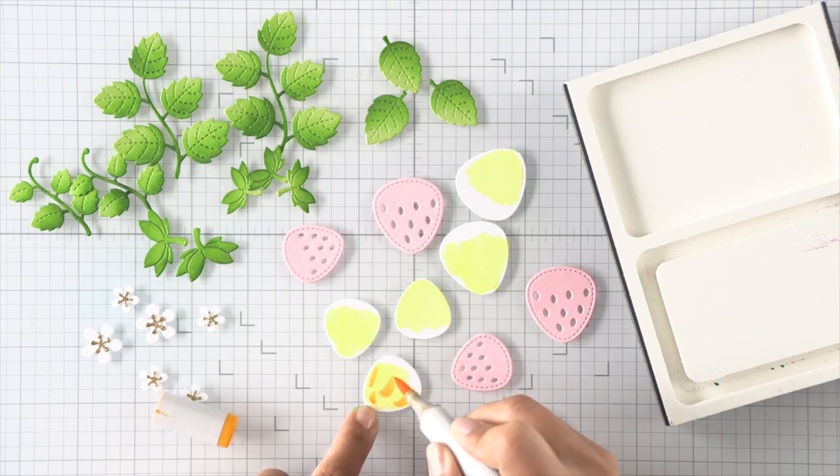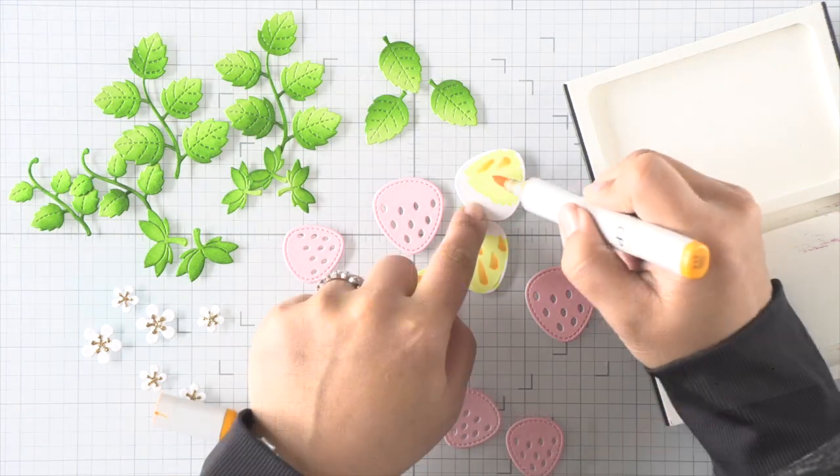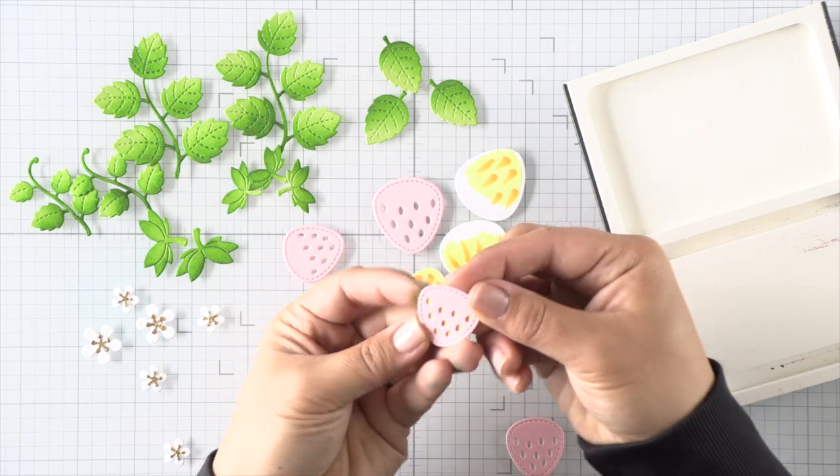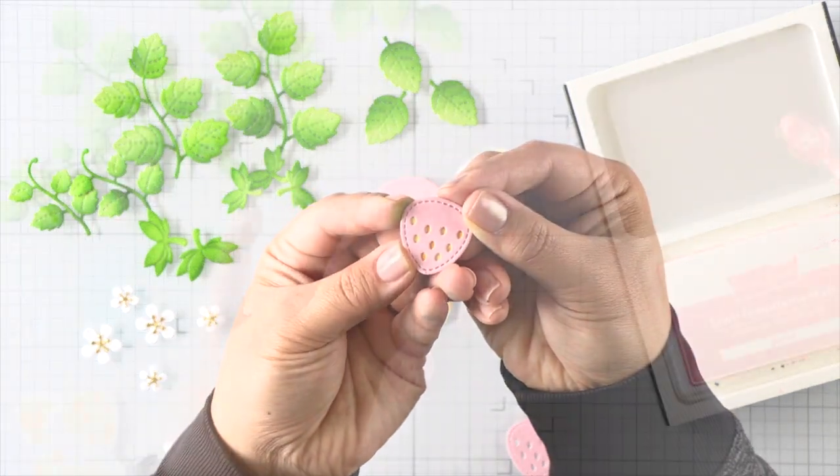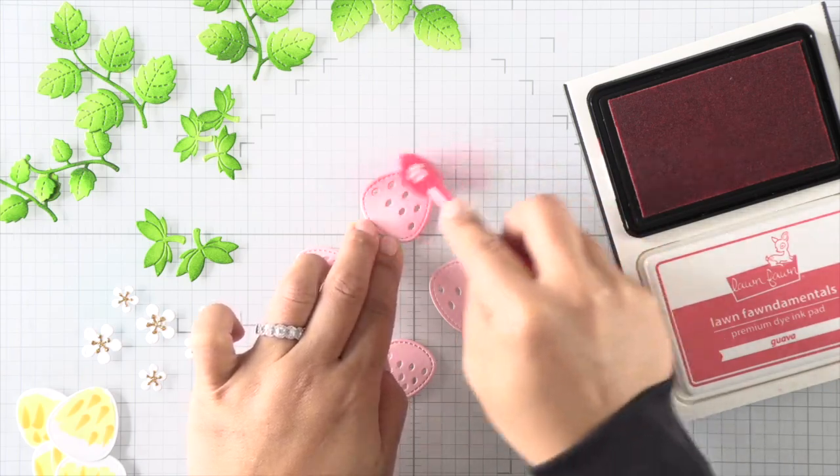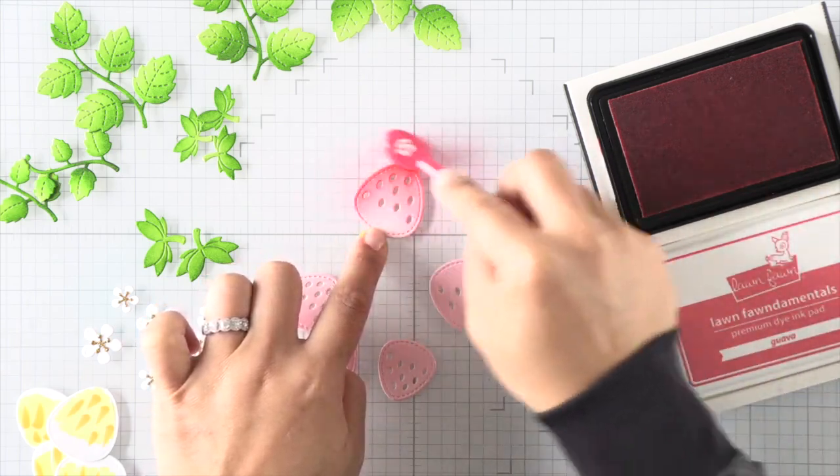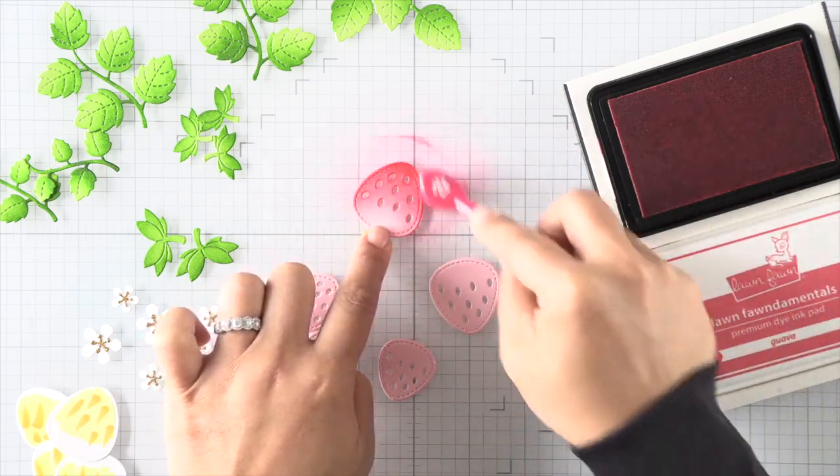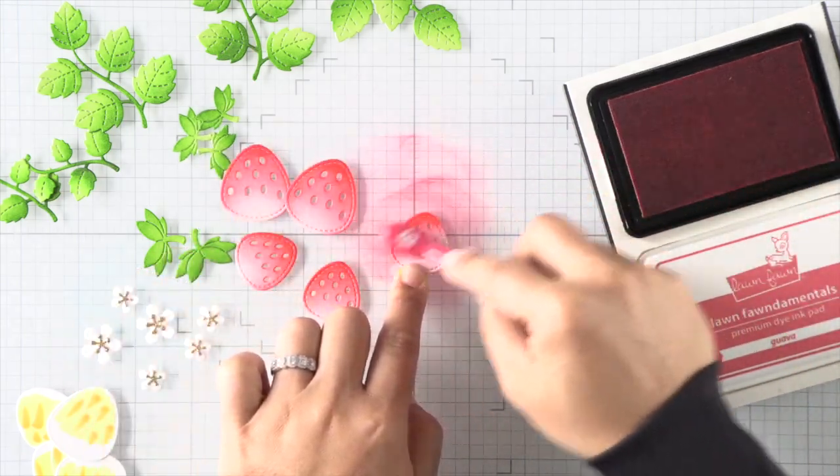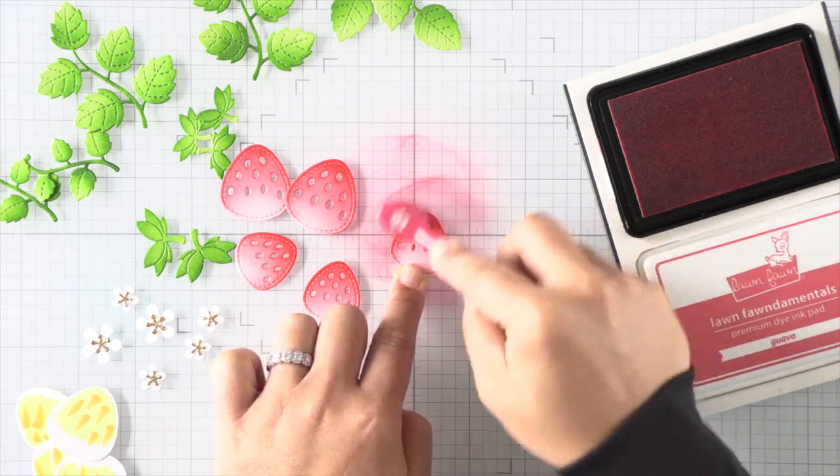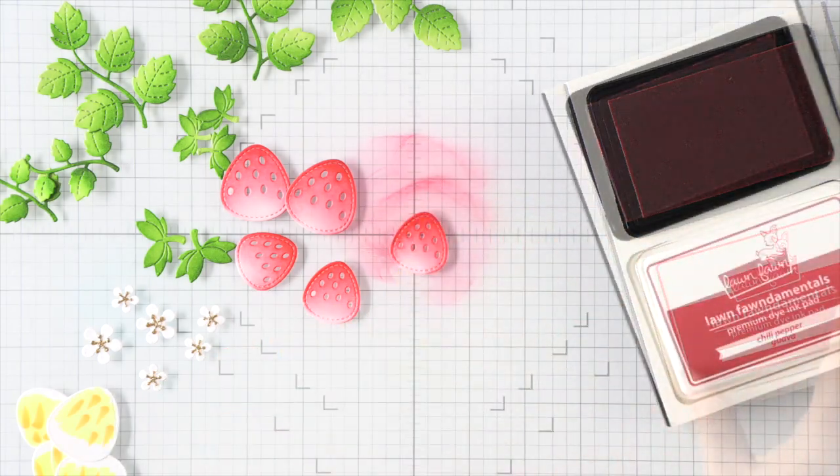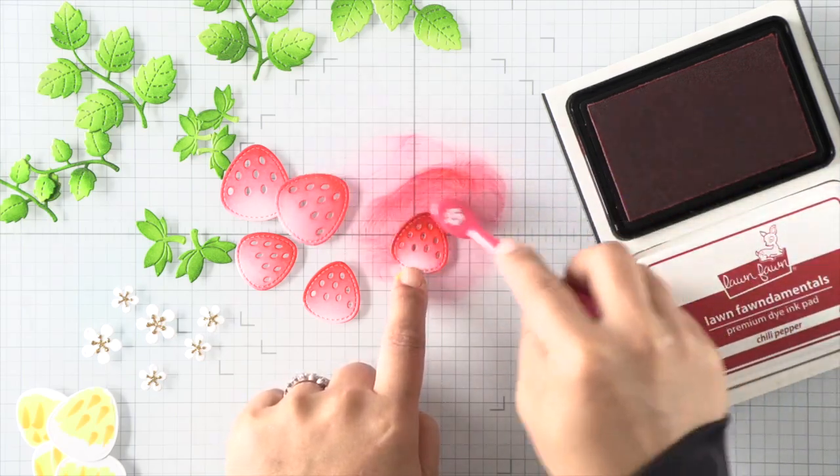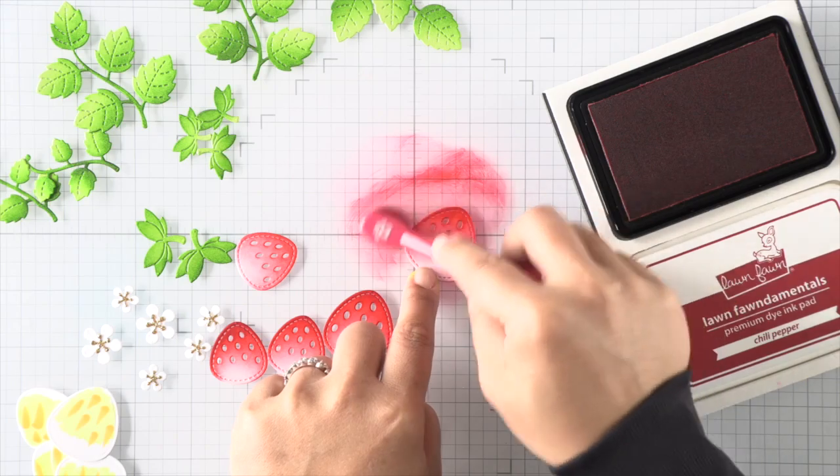I've die-cut the strawberries themselves using some Ballet Slipper cardstock, and I wanted to add some yellow and orange for the little seeds that are gonna pop through. I've used some Copic markers because that's just easier than die-cutting a bunch of colored cardstock. Once I've added those details, we can go ahead and start ink blending these little strawberries. I'm starting with guava ink, adding a light blend of color towards the bottom of each strawberry and blending up towards the center at the top.